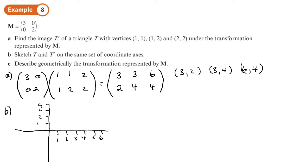Let's plot each point and see what we get. We'll draw the original triangle T, which has coordinates (1,1), (1,2), and (2,2). Then T' has coordinates (3,2), (3,4), and (6,4). Because I haven't drawn it on a grid it may not be easy to see, but it looks like it's stretched more in one direction than the other.